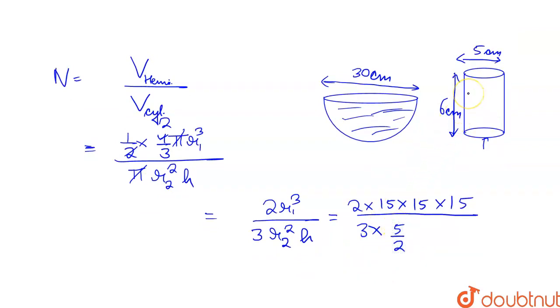So what is the radius? 5 by 2. So 5 by 2 into 5 by 2 into the height which is 6.